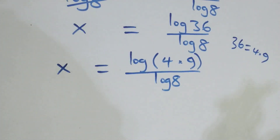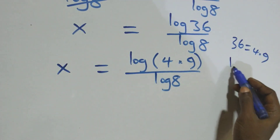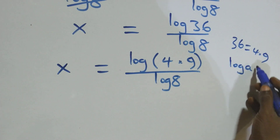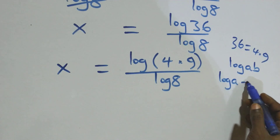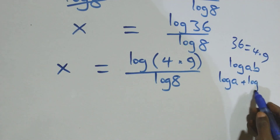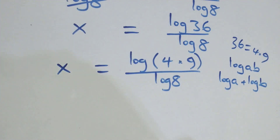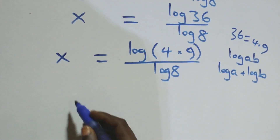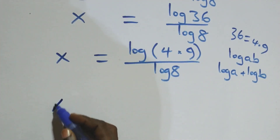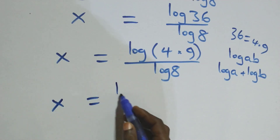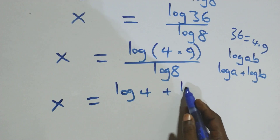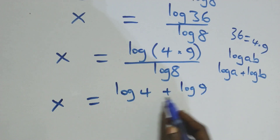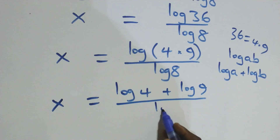This follows from the law of logarithms: when we have log(a times b), this is the same thing as log a plus log b. So what we have here becomes x equals to (log 4 plus log 9) over log 8.